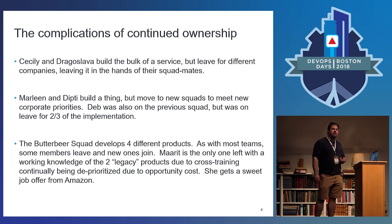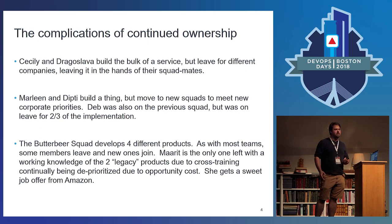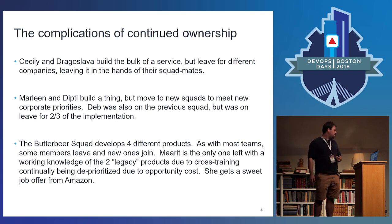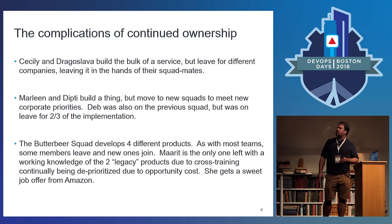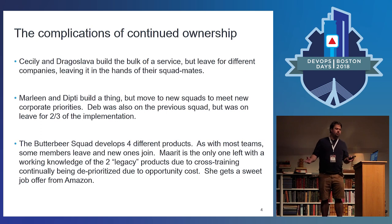There are some complications that arise when real-world situations come into play. Names may have been changed to protect the innocent, and facts may be just fabricated, but here are three common types of problems you might see. You've got a team of two who built the bulk of a service and leave for different companies, leaving it in the hands of their squad mates. What do you do? Who's responsible for that service? You've got a problem on your hands.